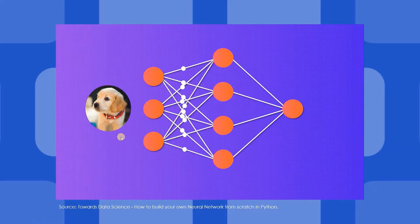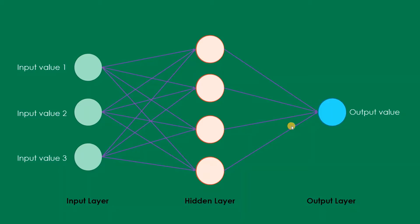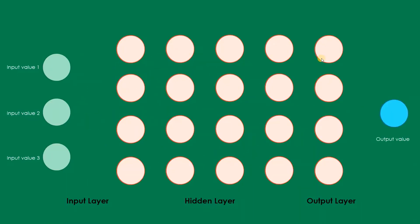Let us talk more about input layers, hidden layers, and the output layer. In this example we have only one hidden layer, but we can have multiple hidden layers to be more accurate for our prediction. This example has five hidden layers, a single binary output value, and three input values.